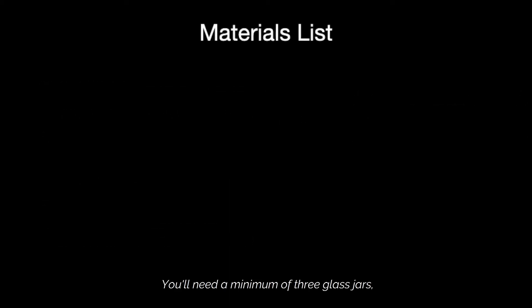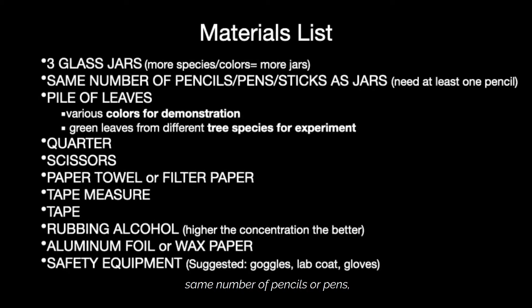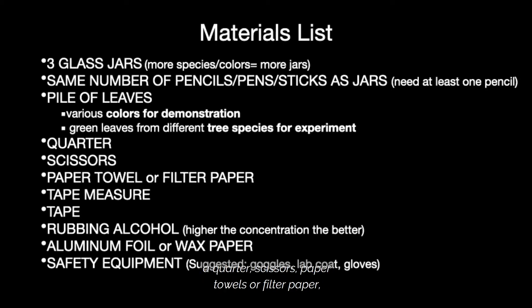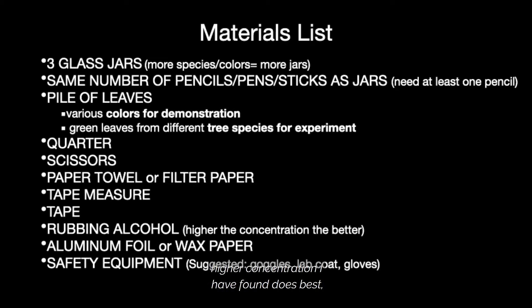You'll need a minimum of three glass jars, the same number of pencils or pens — though you will need at least one pencil — a pile of leaves in various colors for the demonstration or green leaves from different trees for the experiment, a quarter, scissors, paper towels or filter paper, a tape measure, tape, rubbing alcohol (higher concentration works best), and foil or wax paper to cover the jars.